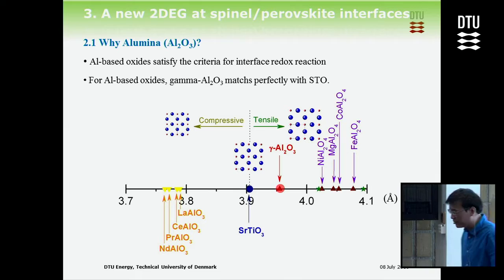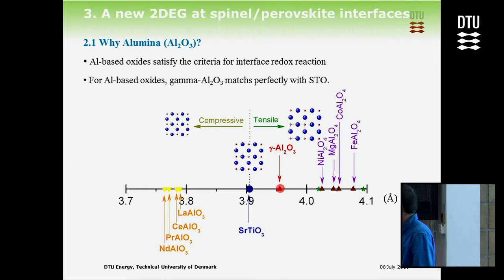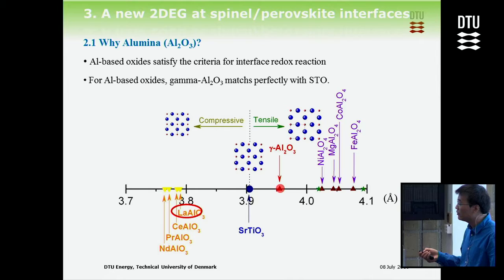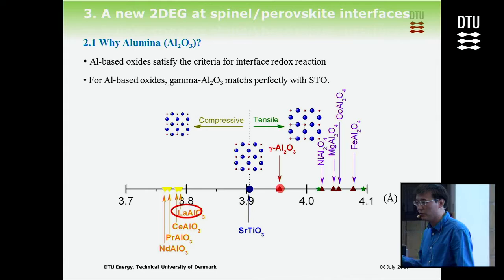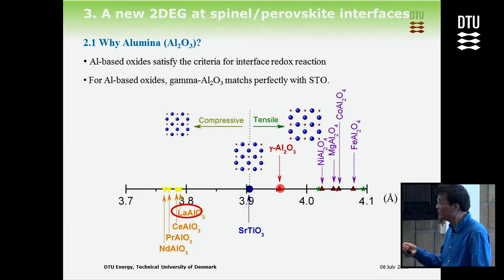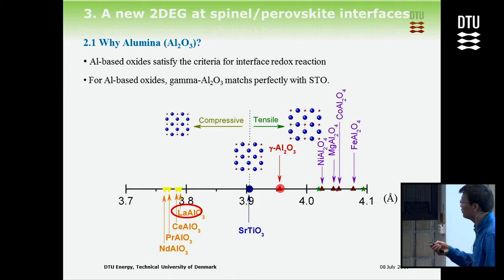Based on this, we think we need to rethink about the LAO/STO system. People have used lanthanum aluminate, which fits in the aluminum-based oxide category, but if you look at all aluminum-based oxides, lanthanum aluminate is not necessarily the best match for STO. We found that gamma-alumina, which is a very common material in the world, can be a better fit.